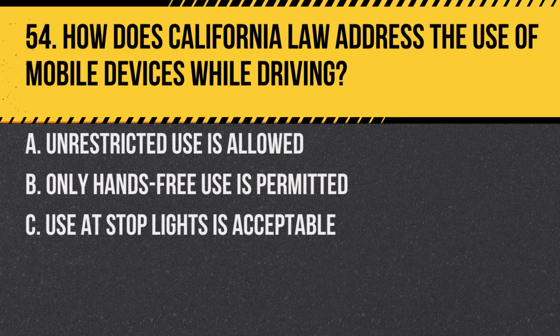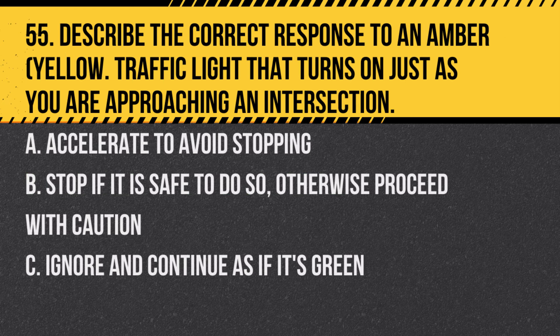Question 54. How does California law address the use of mobile devices while driving? A. Unrestricted use is allowed. B. Only hands-free use is permitted. C. Use at stoplights is acceptable. Answer: B. Only hands-free use is permitted. This law aims to reduce distractions while driving.